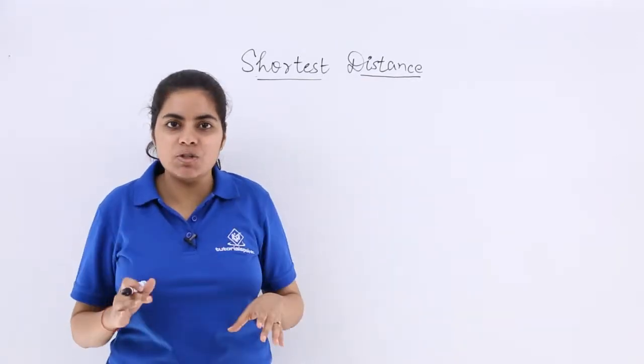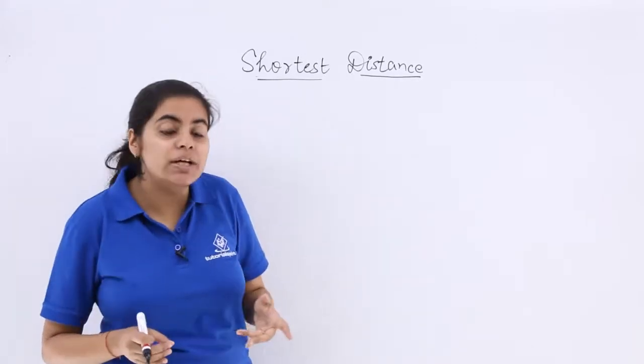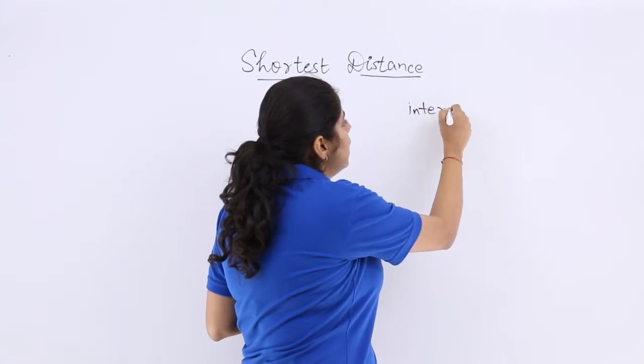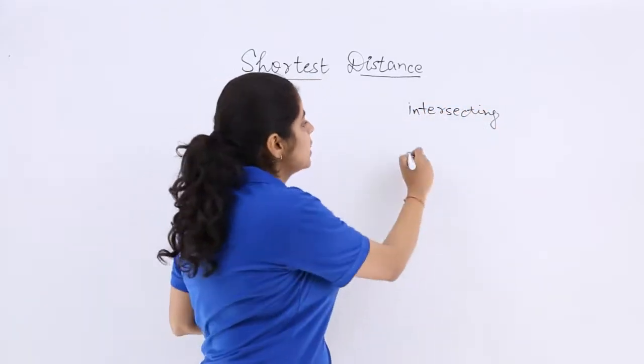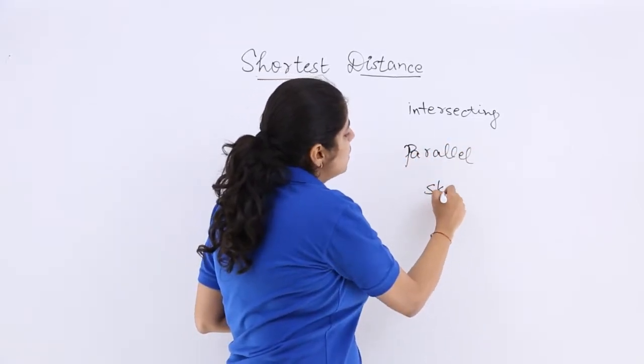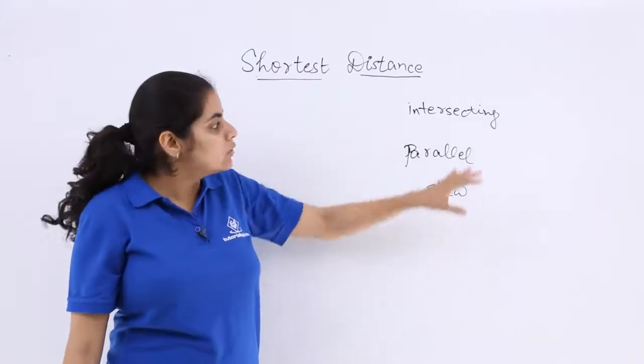So shortest distance, as the name suggests, is the minimum or the least distance that you can find. And if I talk about shortest distance, then it is very obvious to ask whether I am talking about the intersecting lines or parallel lines or skew lines, because now you know about the skew lines also.